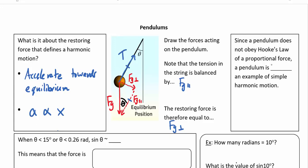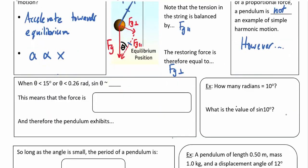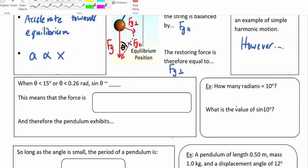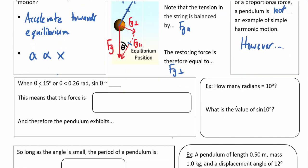The pendulum does not obey Hooke's law of proportional force, so the pendulum is not technically an example of simple harmonic motion. However, if we look at specifically small angles — theta less than 15 degrees — that's approximately 0.26 radians. If you're not familiar with radians, recall that 180 degrees equals pi radians.